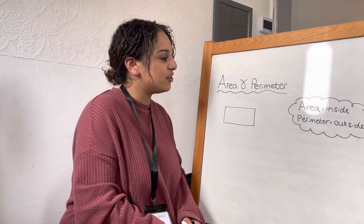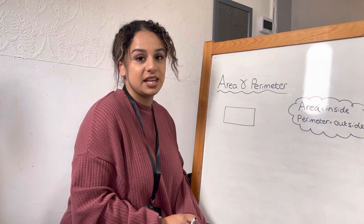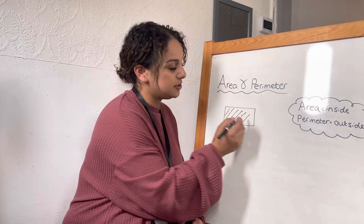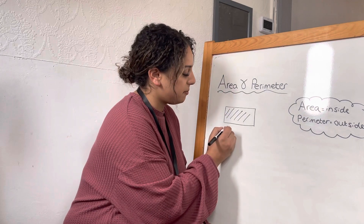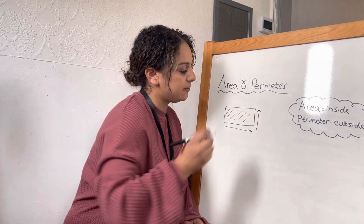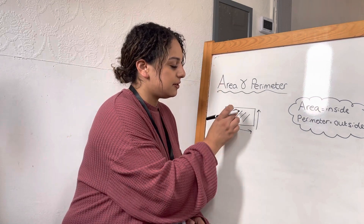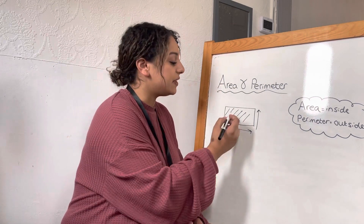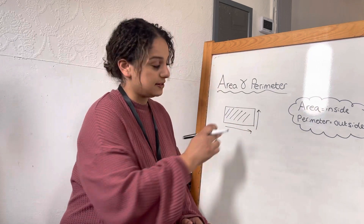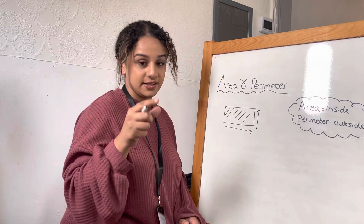Hello. Today we are working on area and perimeter. Two things you need to keep in mind: the area of a shape is the inner part — it's the inside of that shape — and the perimeter is the outer boundary. I like to think of it as a fence situation. If you have a pet rabbit, the area is the inside part of that fence, and the perimeter is the actual fence itself.